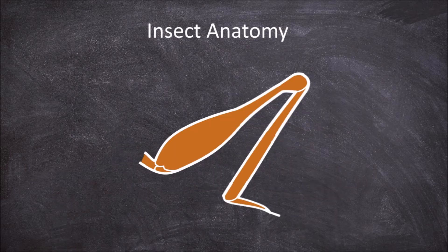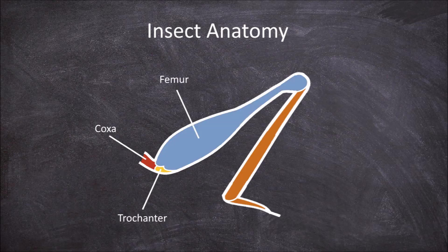The insect leg is varied in form, but they all contain the same six parts: the coxa, which attaches the leg to the thorax, the trochanter, the femur, the tibia and the tarsus.